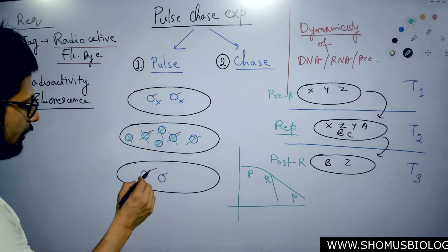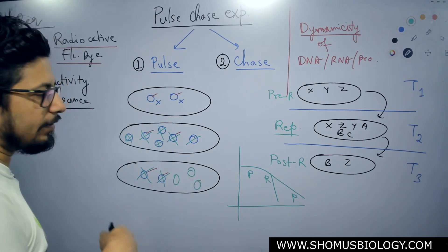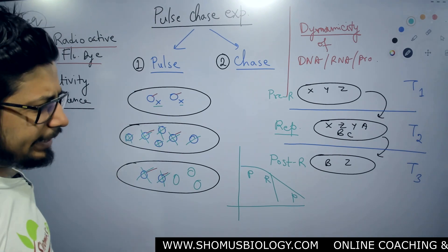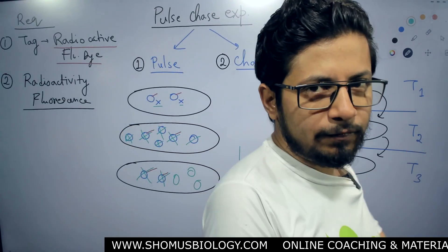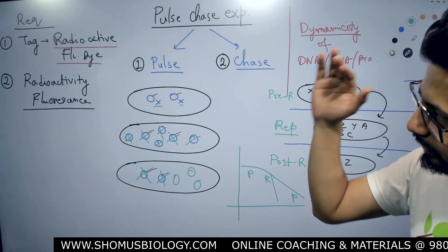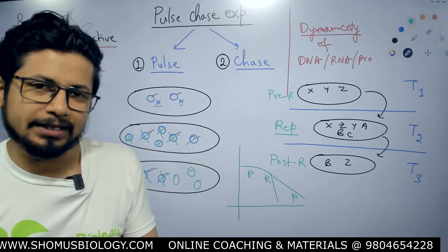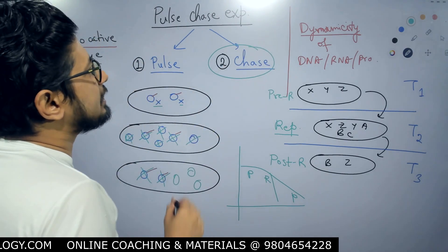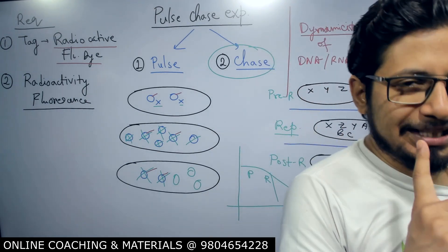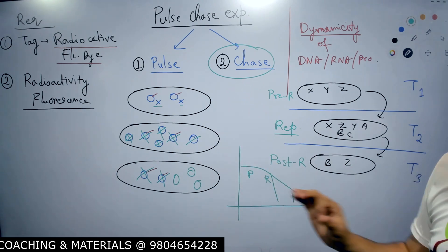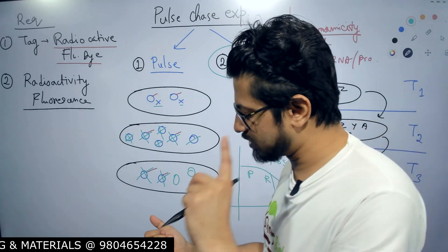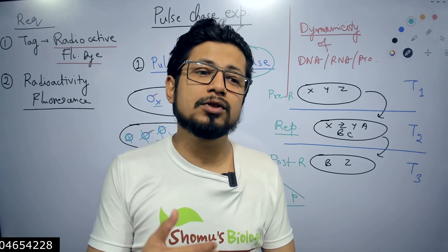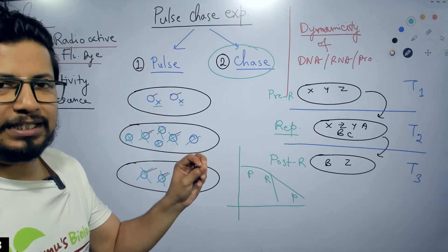By looking at the data, by tagging this particular protein X, if you find that before replication the fluorescence is at a fixed control value, and then during replication the proteins are degraded because their function is no longer required, so the fluorescence drastically drops — that is the Chase part of the experiment. Chase is when we find out the change in fluorescence or change in radioactivity that was tagged in the Pulse part. In the Chase, we find out whether a protein, DNA, or RNA remains stable at different timeframes of cellular growth or not. For cell functioning, the dynamic nature of these macromolecules can be interpreted with the help of the Pulse Chase Experiment.